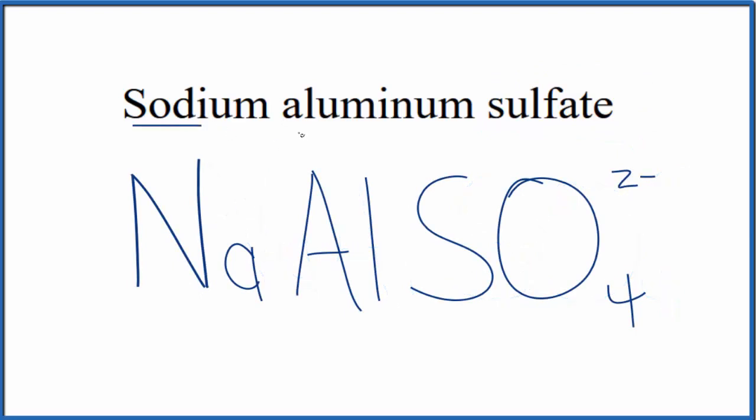Sodium and aluminum are both metals, and then the sulfate ion here is a group of nonmetals—it's a polyatomic ion. Because of that, we have an ionic compound and the charges need to balance.